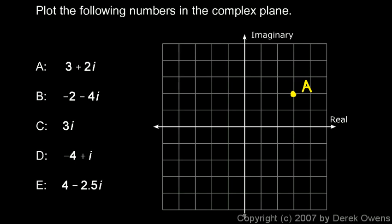Point B is negative 2 minus 4i. So negative 2 on my real axis, I always start at the origin, and so I go negative 2 there. And then minus 4i takes me down to there. So this point right here is point B.